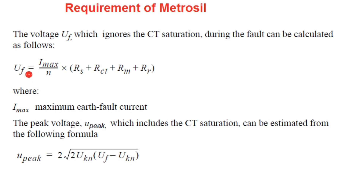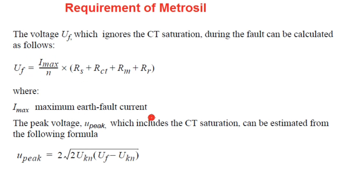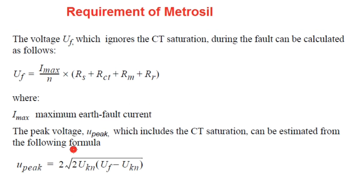Uf is given by: Uf = (Imx / n) × (RS + RCT + Rm + Rr), where RS is the stabilizing resistance, RCT is the CT internal secondary resistance, Rm is the loop resistance from the CT secondary circuit to the relay, and Rr is the relay burden in ohms. Imax is the maximum earth fault current. If the peak voltage exceeds 3 kV, a metrosil is required connected in parallel with the resistance and relay coil, to protect relay insulation under internal fault conditions.